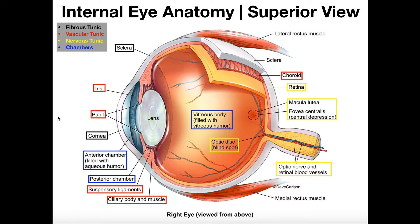Let's track the flow of light through the eye. Light will come in and pass through the cornea, then through the anterior chamber, then through the pupil — which is formed by the iris. From the pupil it hits the posterior chamber, then it hits the lens, and from there the light is focused to different points on the back of the eye.